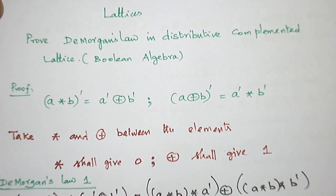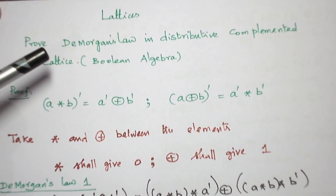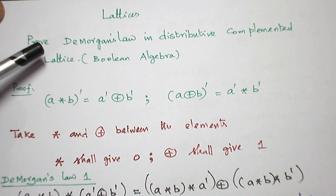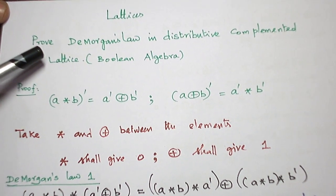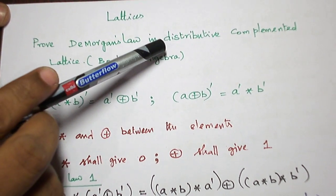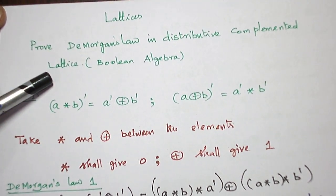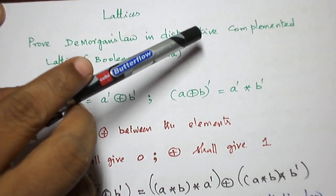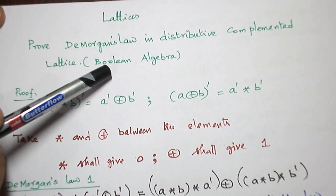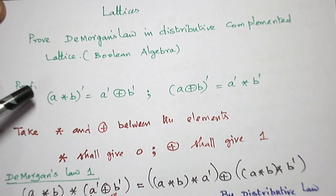Hello students. Today let us see an important result in lattices and boolean algebra. This is the result: prove De Morgan's law in a distributive complemented lattice. A distributive complemented lattice is otherwise called boolean algebra.